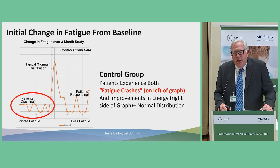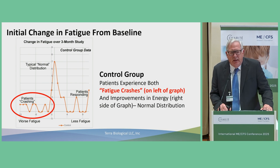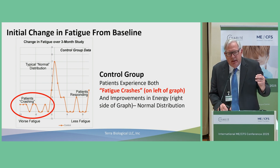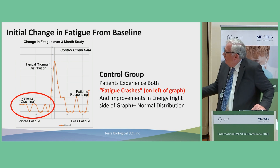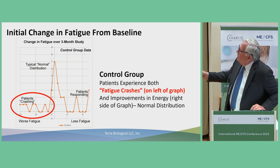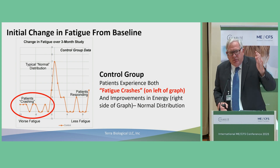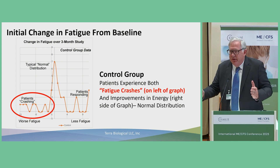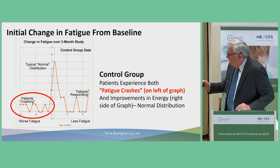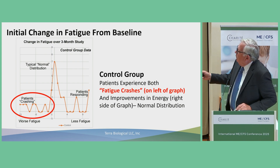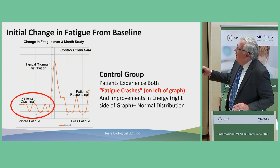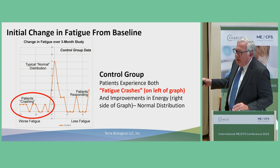This is a four-year transform of the fatigue scale data. The vertical scale is the number of patients with a particular score, which represents the start of the study minus the end — so how they've changed over three months. In the control group, most patients stayed the same. Some patients got better, not many. A lot of patients got worse, and this is the crash that you always want to avoid.